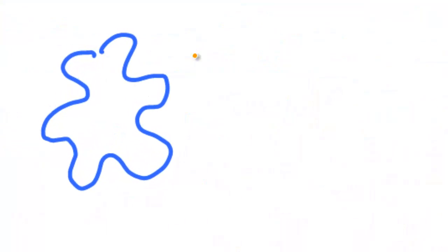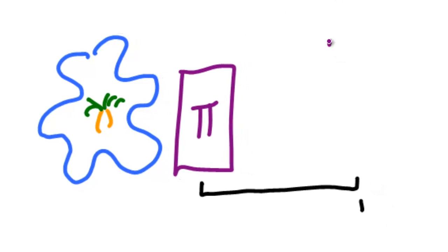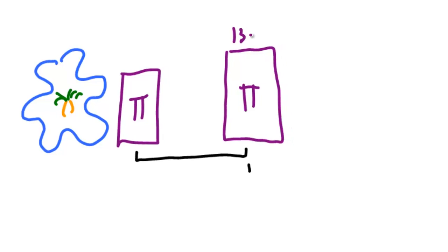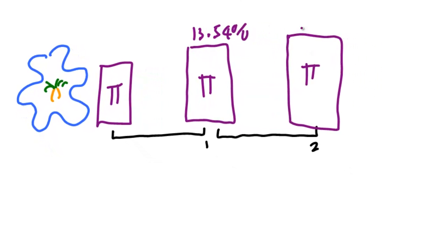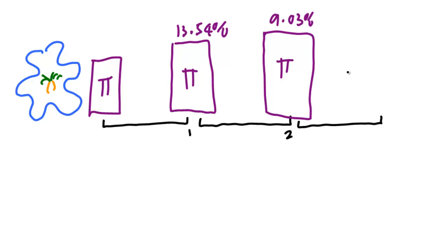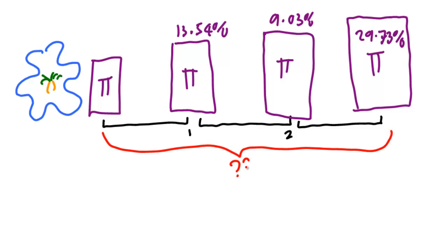Suppose I'm an investor on Finlingo Ireland and I just invested in a portfolio. In the first year, it grows by 13.54%. In the second year, my portfolio grows by 9.03%. And in the third and final year, it grows by 29.73%. So what's the total growth of the portfolio over the full three years?